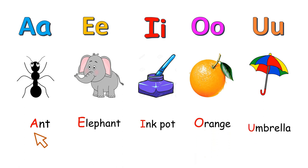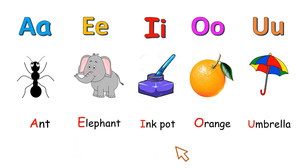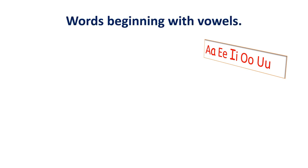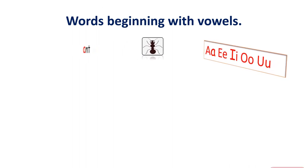As you can see, in these words, the first sound is a vowel sound. Let's read the words again. Ant — look at the first letter. It's A, a vowel.